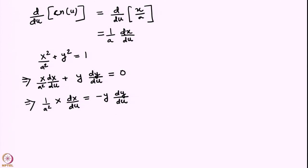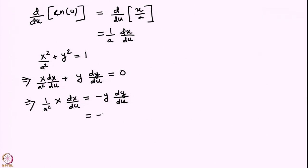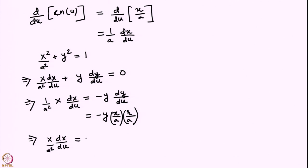Recall that y was just SN(u), so we already know dy/du. Substituting, the right-hand side becomes −y · CN(u) · DN(u), since CN(u) = x/a and DN(u) = r/a. So we have (1/a²)·x·(dx/du) = −y·(x/a)·(r/a).